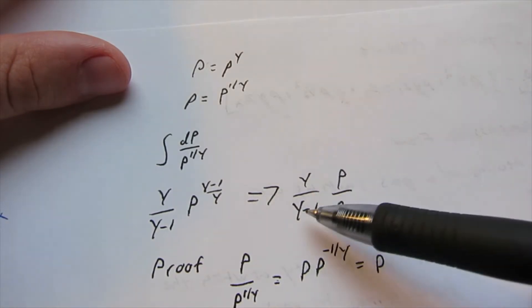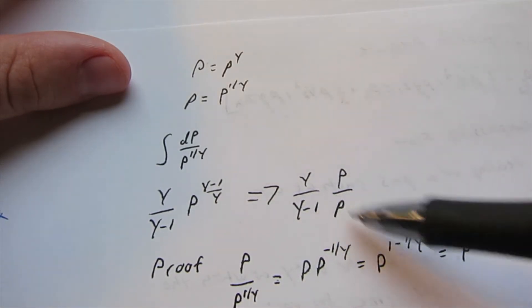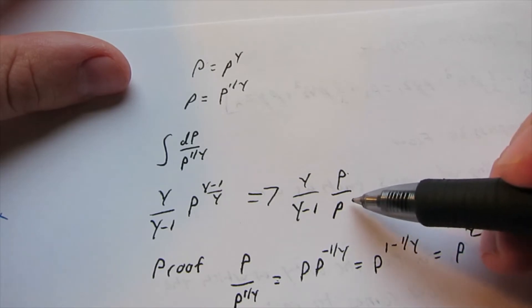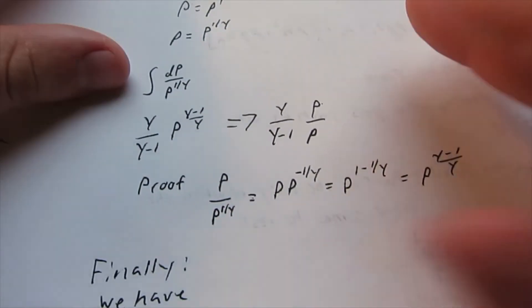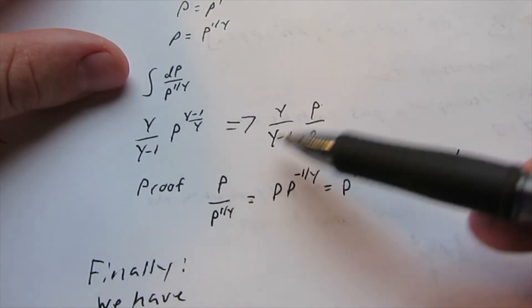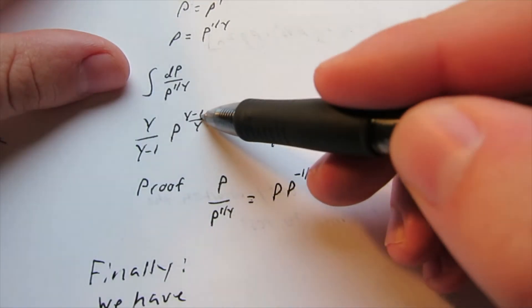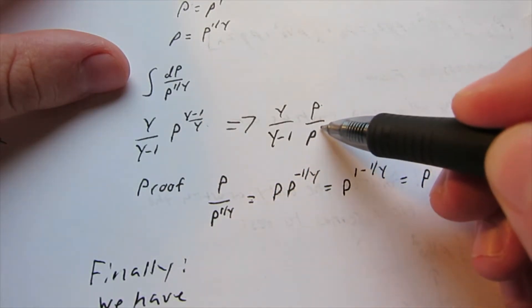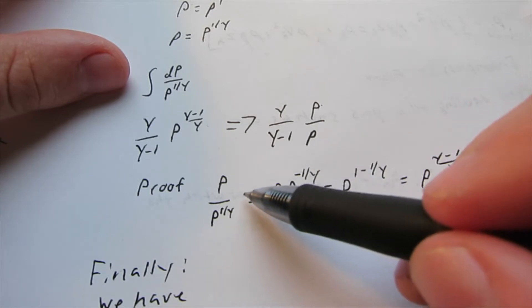But this can also be written as gamma over gamma minus 1, pressure divided by density, and then the proof that the pressure to the gamma minus 1 divided by gamma equals pressure over density can be seen here.